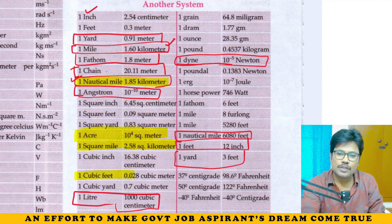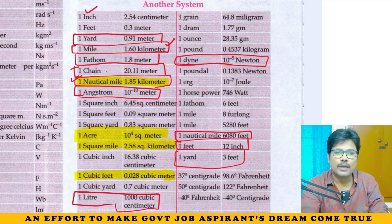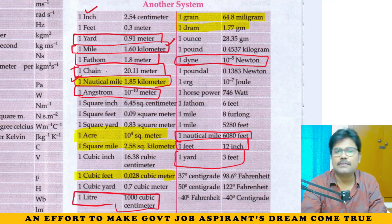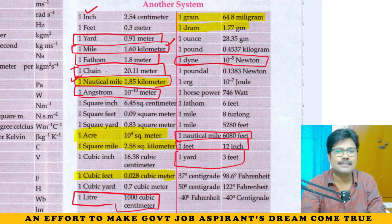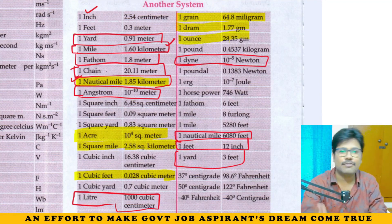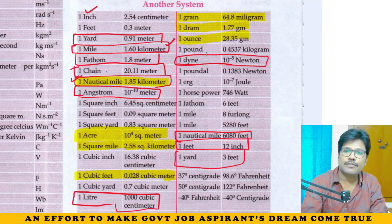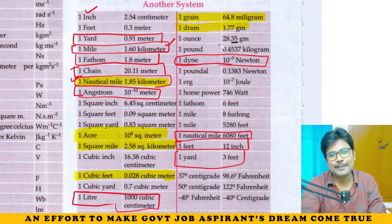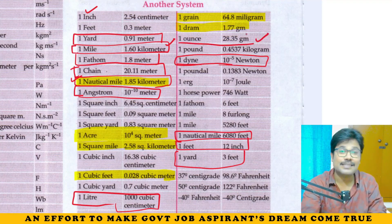One cubic foot is equal to 0.028 cubic meters. One grain is equal to 64.8 milligrams. One ounce is equal to 28.35 grams.